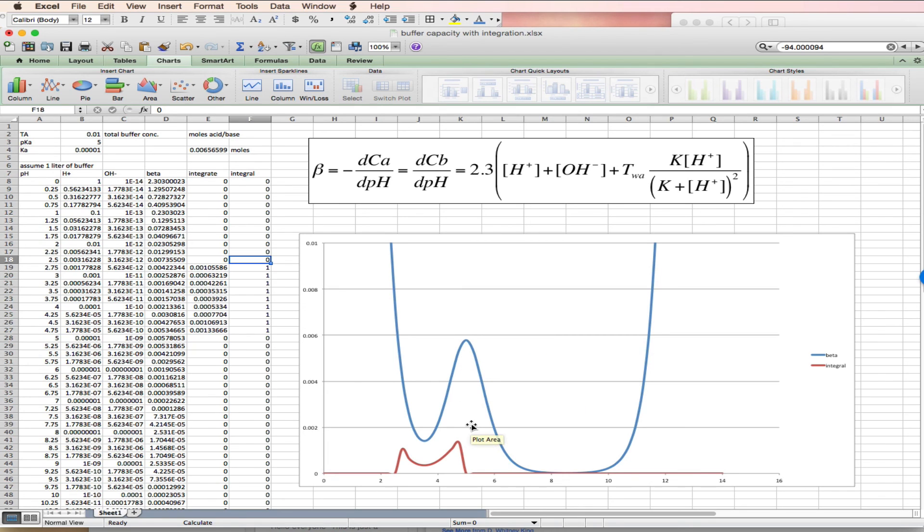And the area underneath the buffer capacity curve is the amount of strong acid or strong base you would need to add to change the pH over the integral, over the range of the integral.